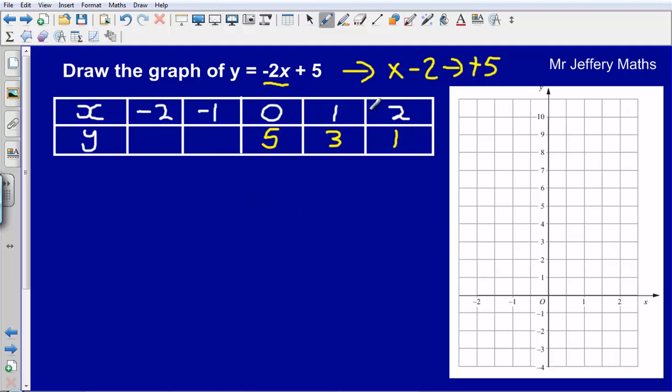So we've started with the positive numbers here. Notice a pattern here, I'm going down by 2 each time. So this number here has to be 7 and this one here has to be 9. This technique only really works for linear graphs where it's not x squared or anything like that. So this technique only works for graphs where we have y equals something x plus something else.